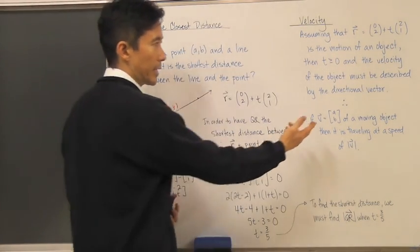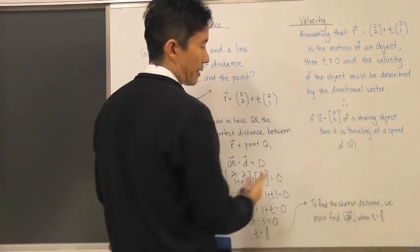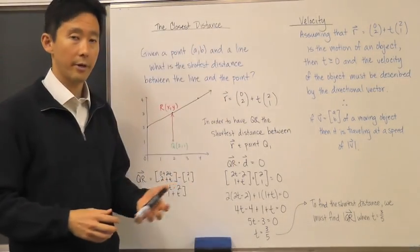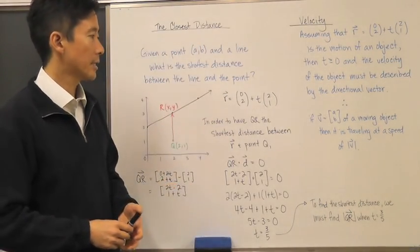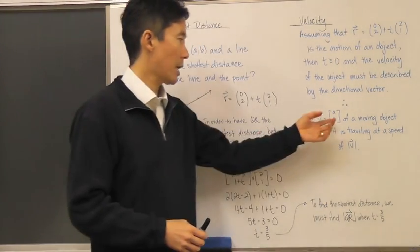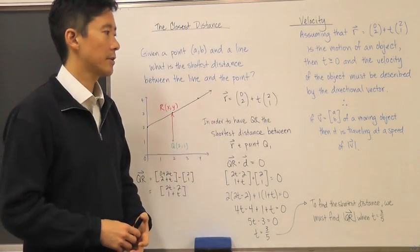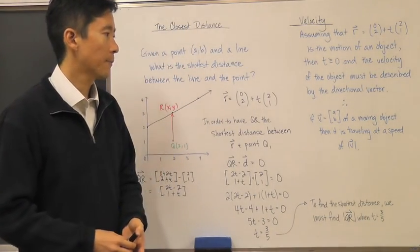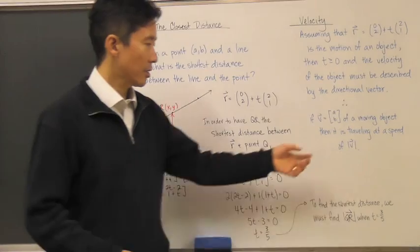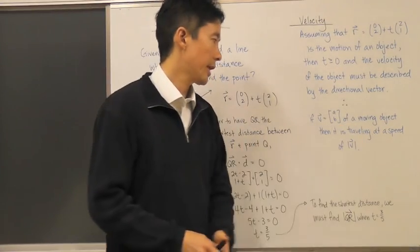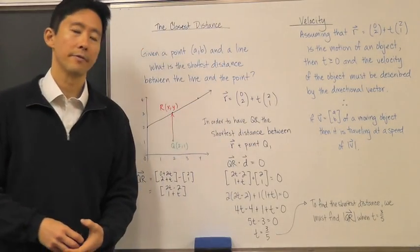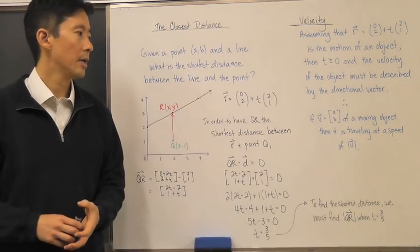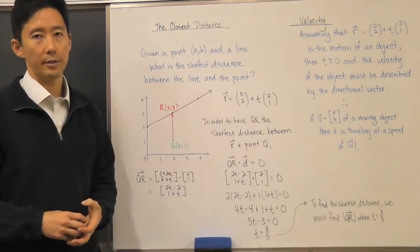So if v is the velocity vector equal to (a, b), that velocity vector describes the velocity of the moving object, and the object is also traveling at a speed equal to the magnitude of the vector v.